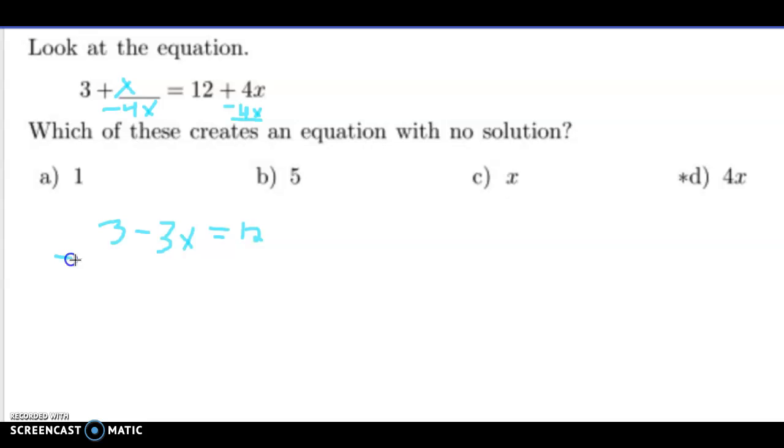I can subtract 3 on both sides and get negative 3x equals 9, divide both sides by negative 3, and x equals negative 3. Well, guess what? That is one solution. Once again, not my answer.